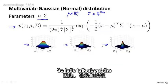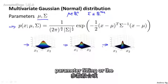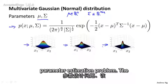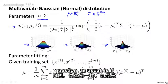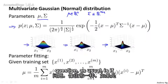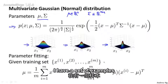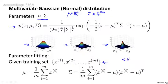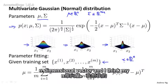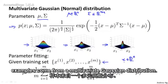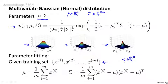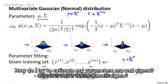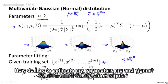Let's talk about the parameter fitting, or the parameter estimation problem. The question is: if I have a set of examples x1 through xm, where each of these examples is an n-dimensional vector, and I think my examples come from a multivariate Gaussian distribution, how do I try to estimate my parameters mu and sigma?